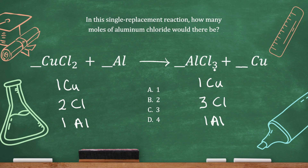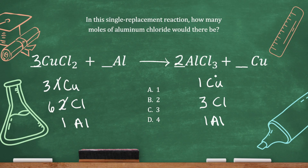The only thing that's not balanced is the chlorine. Since these subscript numbers are fixed and I can't change them, I need to find a common multiple of 2 and 3. The lowest common multiple is 6. To make 6 chlorine on the left I'll put a 3 — that makes 6 chlorine but also changes the copper. On the right, to make 6 chlorine I'll put a 2 — that also changes the aluminum.